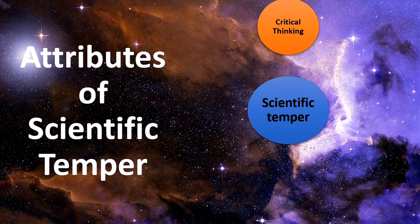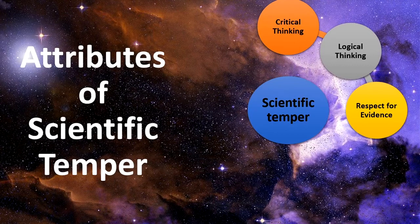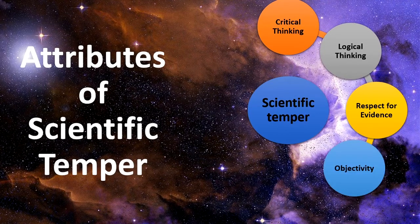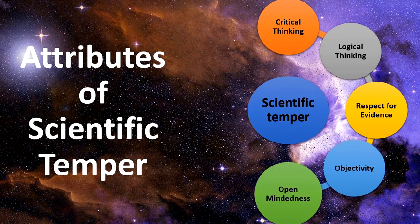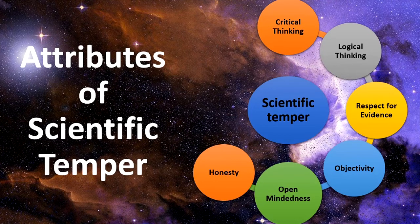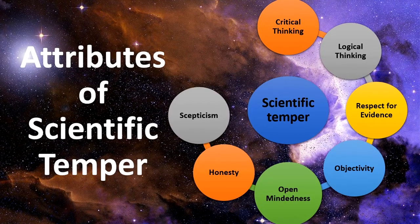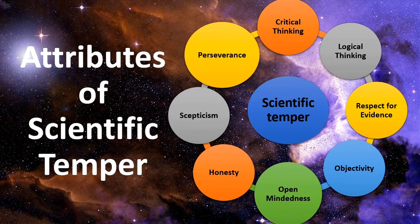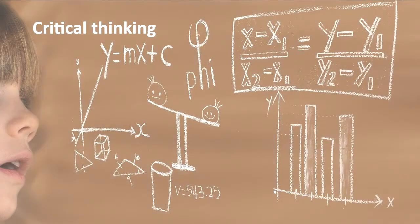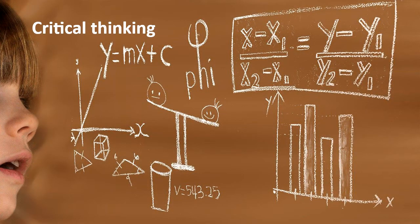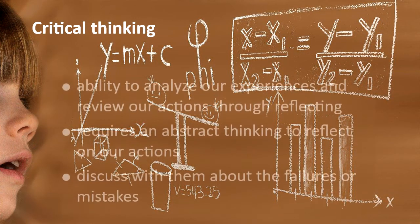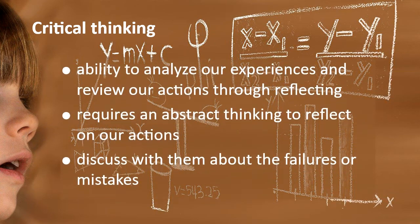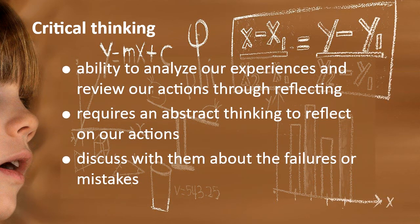Let us move towards the attributes of scientific temper. There are a few common attributes: critical thinking, logical thinking, respect for evidences, objectivity, open-mindedness, honesty, skepticism, and perseverance. The first is critical thinking — we are basically talking about the ability of an individual to analyze experiences and review actions through reflecting.